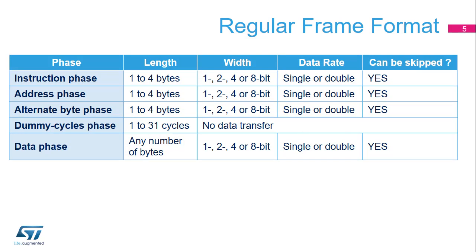This table summarizes the features of each transfer phase. The instruction phase transmits an instruction to the memory device specifying the type of operation to be performed. The address phase transmits the address of the operation. In the alternate bytes phase, 1 to 4 bytes are sent to the external device, generally to control the mode of operation. In the dummy cycles phase, 1 to 31 cycles are given without any data being sent or received, in order to give the external device time to prepare for the data phase at higher clock frequencies. During the data phase, any number of bytes can be sent to or received from the external device. Any of these phases can be configured to be skipped, but at least one of the instruction, address, alternate byte, or data phases must be present.